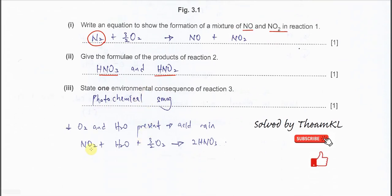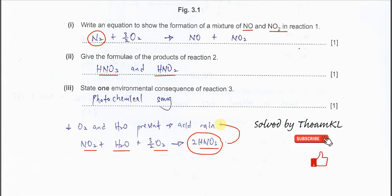For your information: if the question asks about the reaction between NO₂, water, and oxygen together — three reactants — you form nitric acid (HNO₃). This nitric acid is the main cause of acid rain.